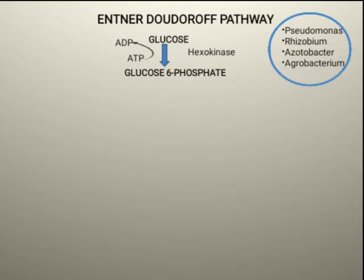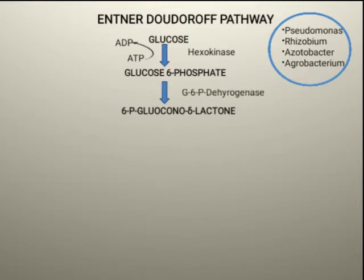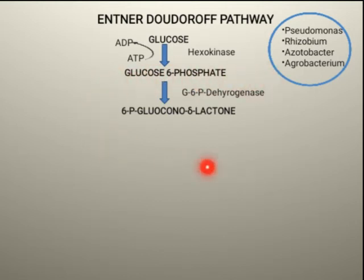Glucose-6-phosphate in the EDP pathway is converted into 6-phosphogluconolactone. This conversion is carried out by the enzyme glucose-6-phosphate dehydrogenase. This dehydrogenase enzyme removes hydrogen from glucose-6-phosphate.